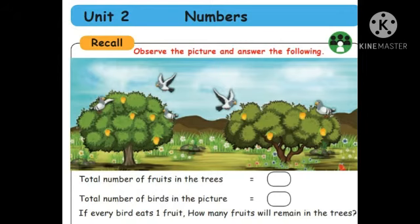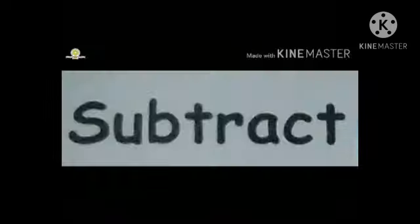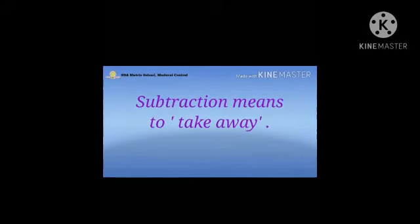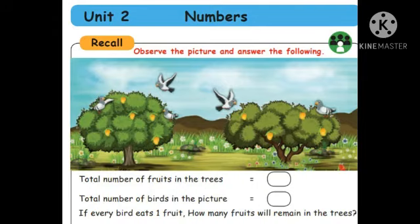Recall — observe the picture and answer the following. All of you know the numbers one to ten: one, two, three, four, five, six, seven, eight, nine, ten. What is subtraction? Subtraction means to take away. Look at the book and observe the picture and answer the following. What do you see in the pictures?